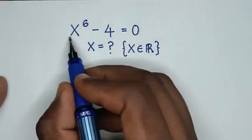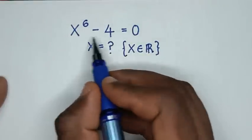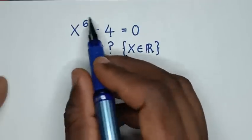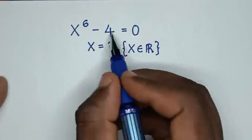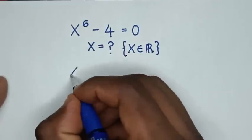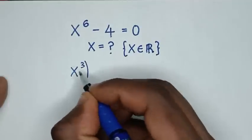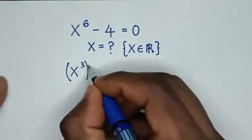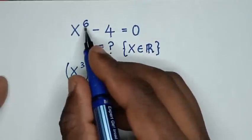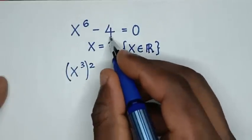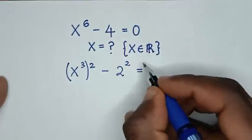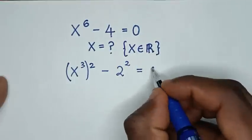Now, in the first step, from the left side, x to the power of 6 minus 4 — we will make this in the form of a perfect square. So, x to the power of 6 is the same as (x³)², because power of 3 times power of 2 is power of 6, then minus 4 written as 2², then is equal to 0.